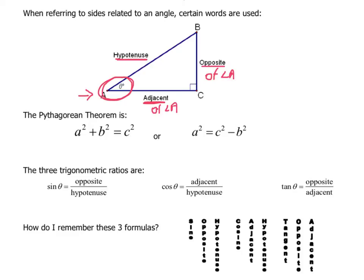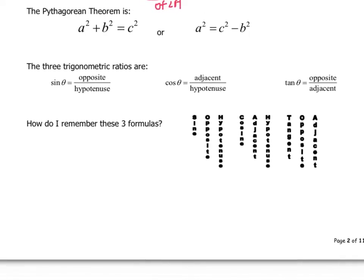The next thing we want to recall is the Pythagorean theorem. This is the classic statement: A squared plus B squared equals C squared. A and B are the shorter sides — called the legs of our right triangle — and C refers to the hypotenuse. So we really mean the leg squared plus the other leg squared equals the hypotenuse squared.